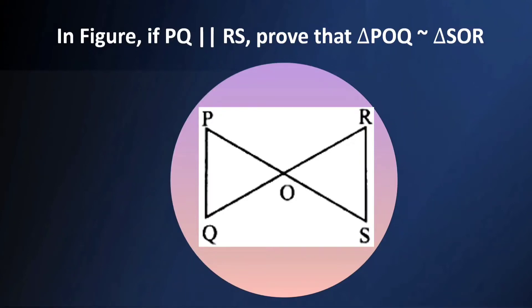In the figure, if PQ is parallel to RS, prove that triangle POQ is similar to triangle SOR.